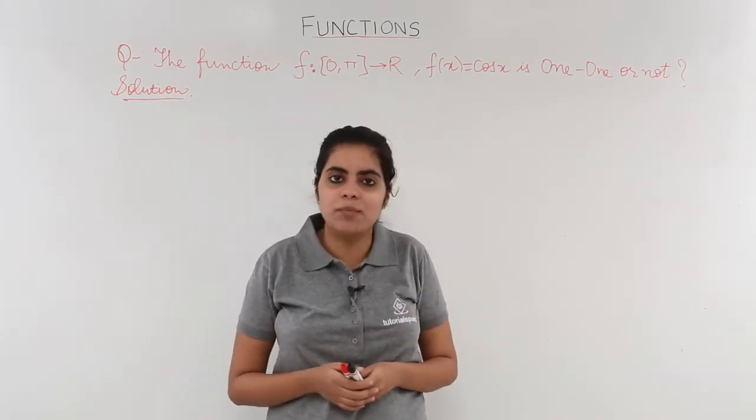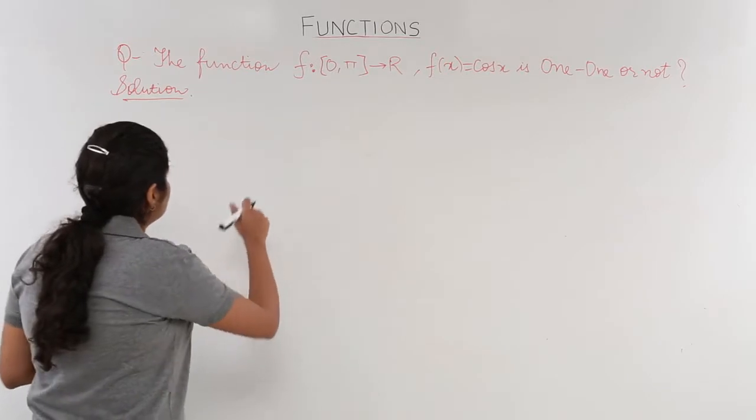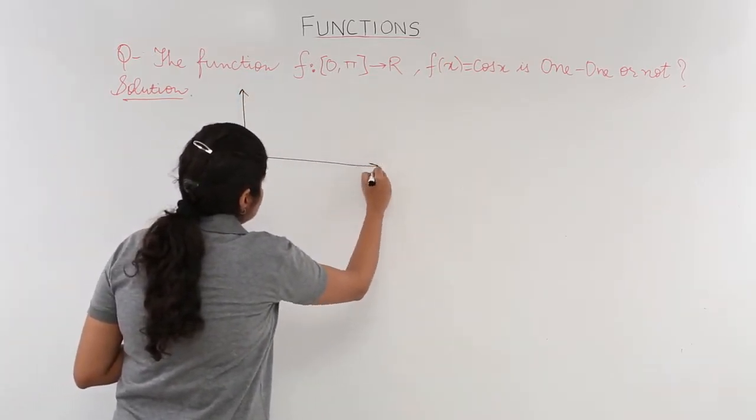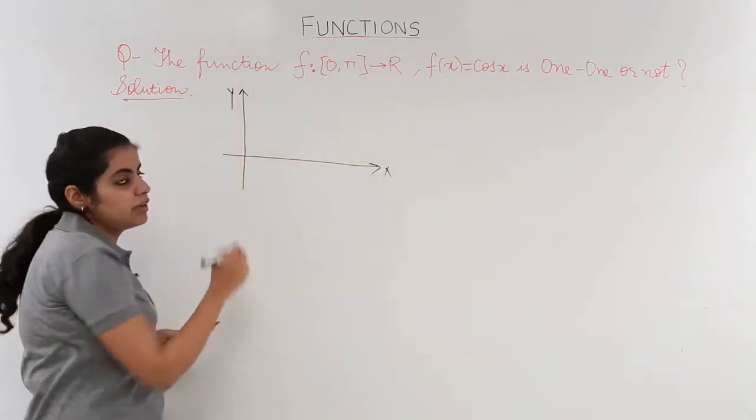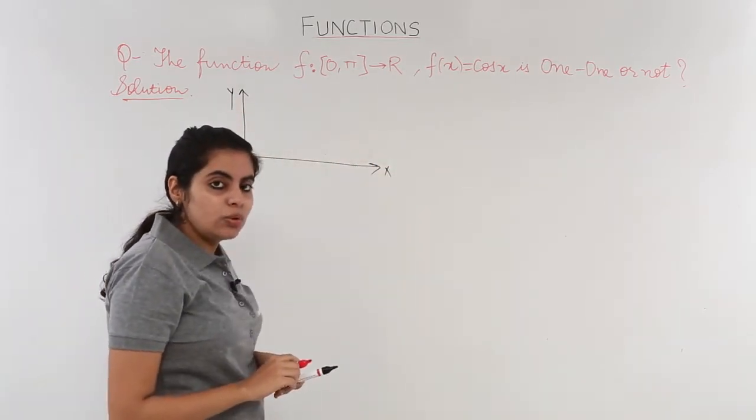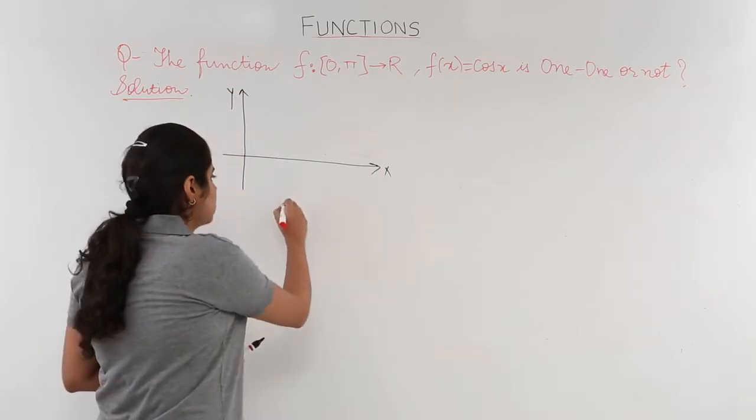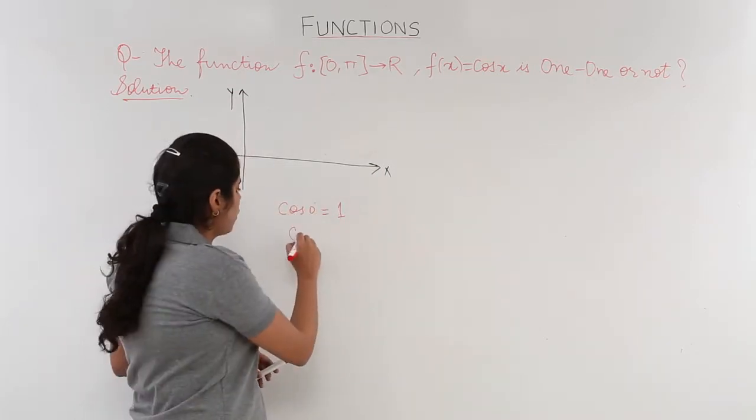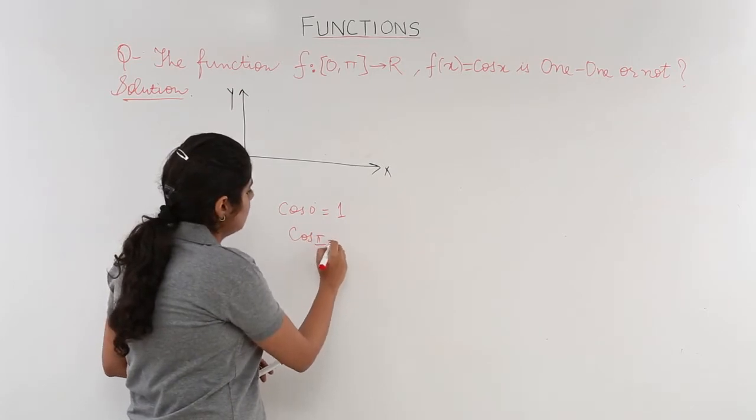Let's see how to solve the problem. This is the x-axis, this is the y-axis. I know cos 0 degrees is equal to 1, cos 90 degrees is equal to 0.